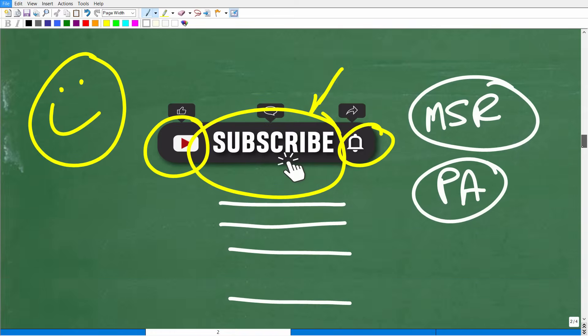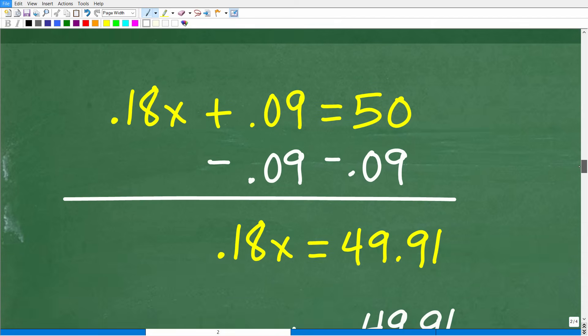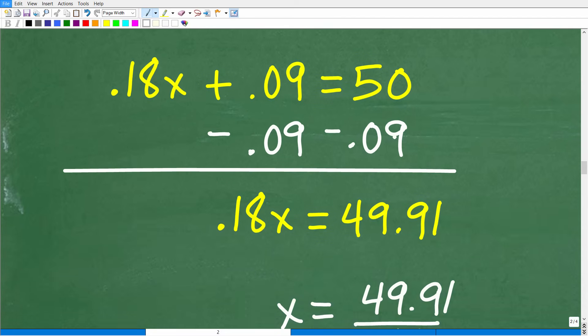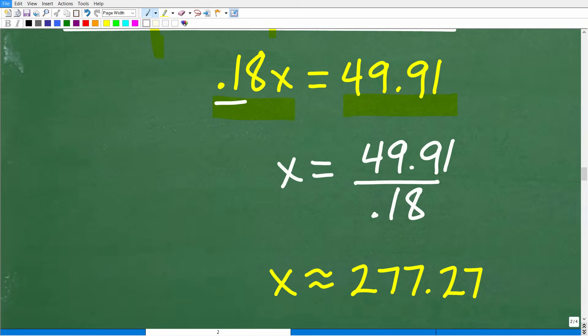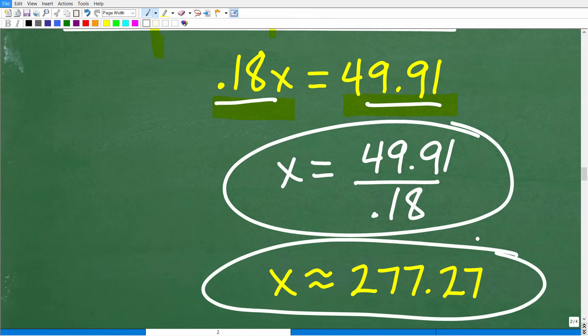What we want to do now is move all of our numbers to the right-hand side and keep all of our variable terms on the left. We're simply going to subtract 0.09 from both sides of the equation. Then we're going to add down in a column manner. 0.18x plus nothing is 0.18x. Positive 0.09 minus 0.09 is 0. But 50 minus 0.09 is 49.91. To solve for x, all we have to do is divide both sides of the equation by 0.18. In our calculator, we're going to go 49.91 divided by 0.18, and we're going to get approximately 277.27.